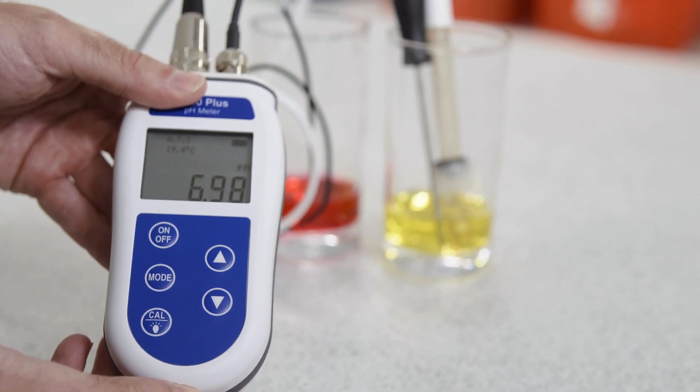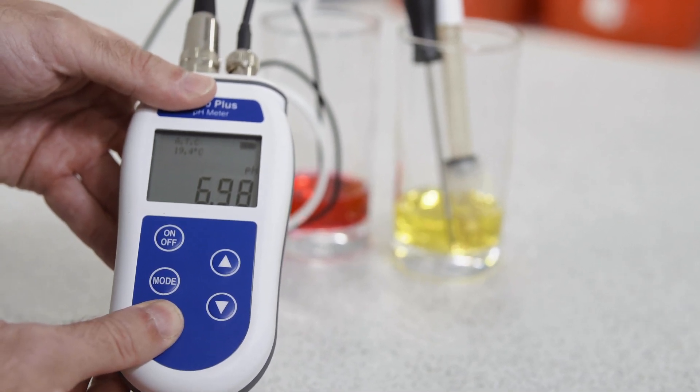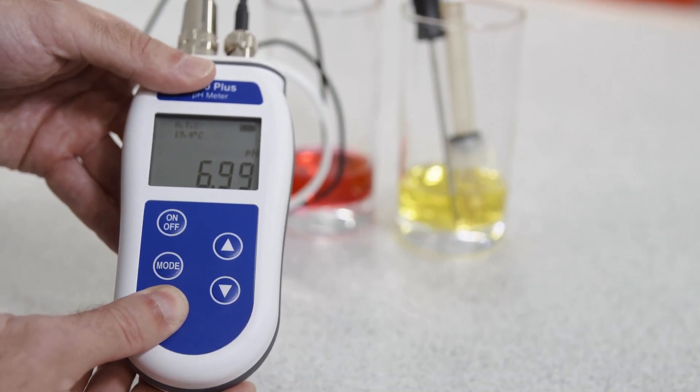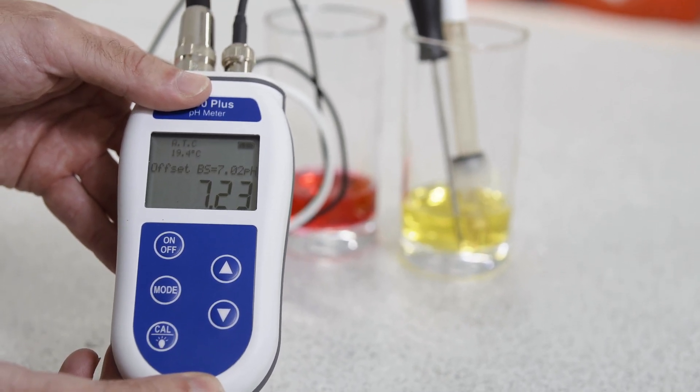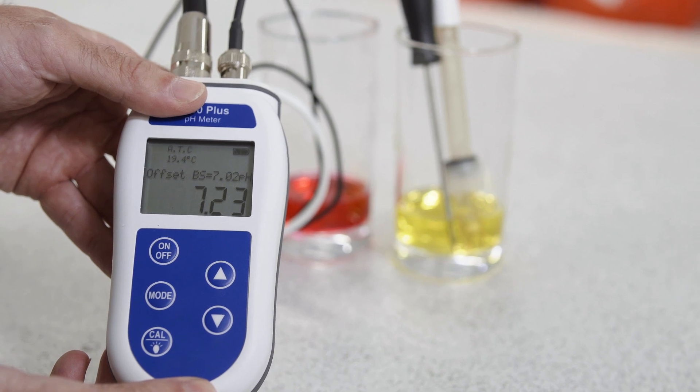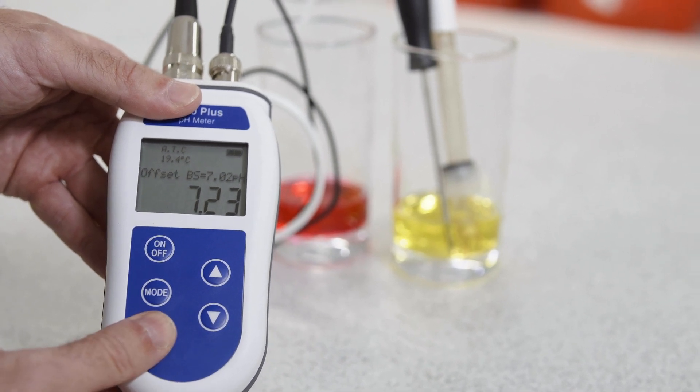Press and hold the cal button. Auto cal will flash on the screen followed by offset 7 pH. This confirms the buffer solution you're reading has a pH value of 7. Press cal again.